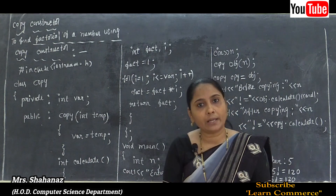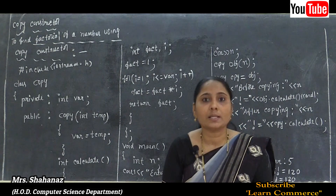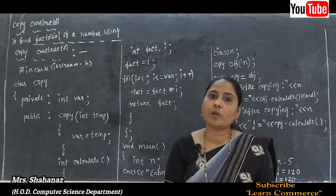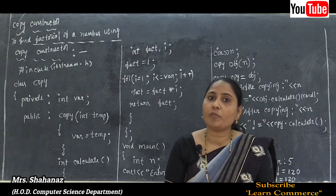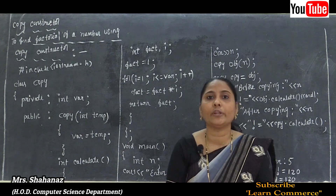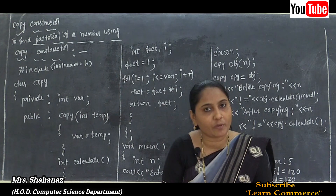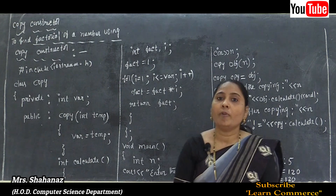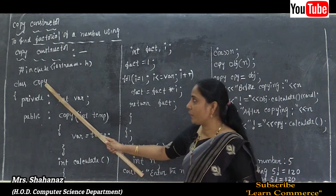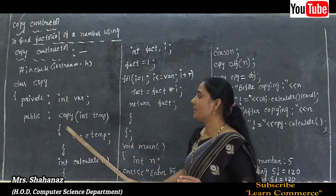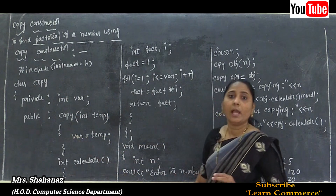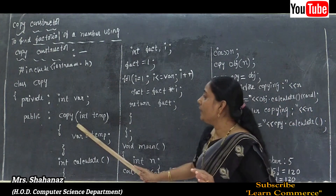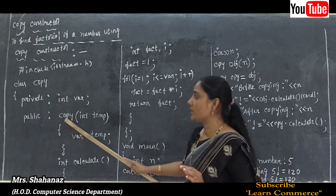Under the public access specifier, we declare the member functions of the class. Since we are in the chapter on constructors, we declare a special member function. The special member function is named 'copy' — because the rule of a constructor is that its name must be the same as the class name.